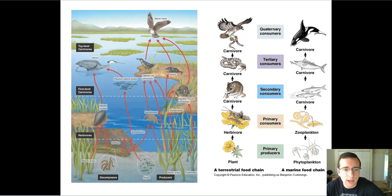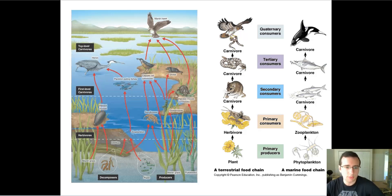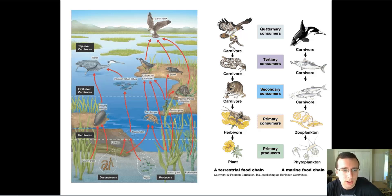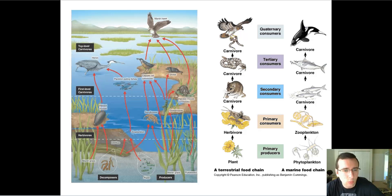In the last topic, we talked about how matter cycles through the ecosystem and flows through ecosystems. We also established that there are limits to the sizes of food chains and food webs because of the way energy gets less and less useful as it goes up the levels, and the majority of the energy gets wasted as heat or used up as work.